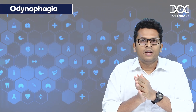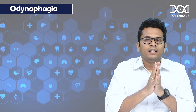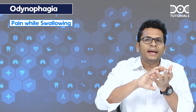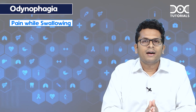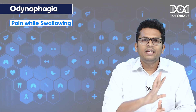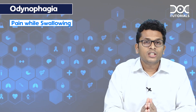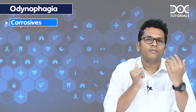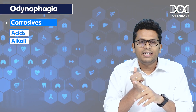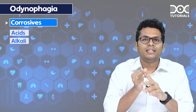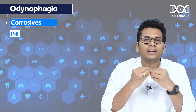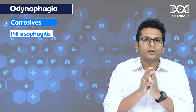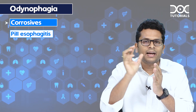What is odynophagia? Odynophagia is pain while swallowing. Now, pain while swallowing can occur in these broad categories. The first one is an external agent, which could be corrosives in the form of acids or alkali, or the second variety is pill esophagitis — various irritants to the esophagus. So this is an external agent, the first mechanism.